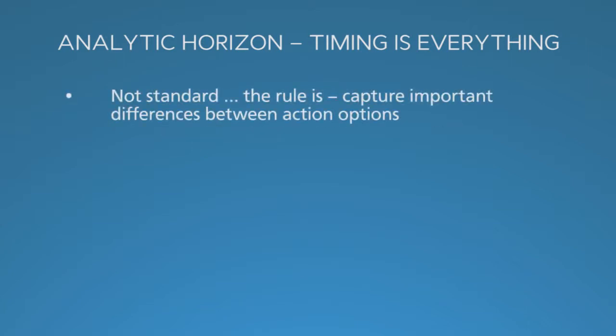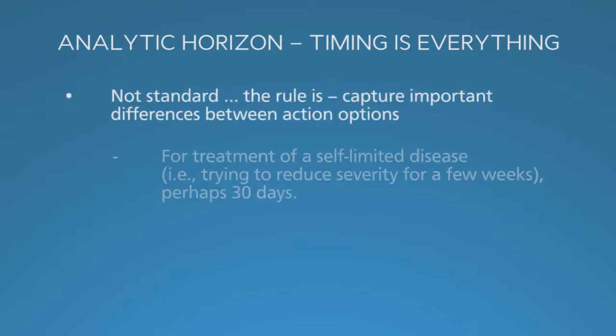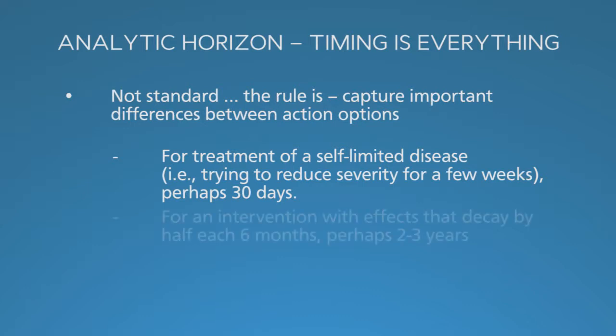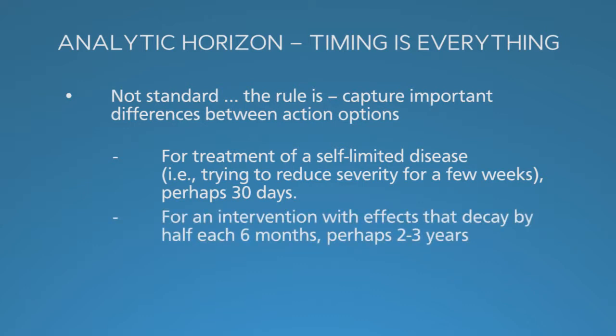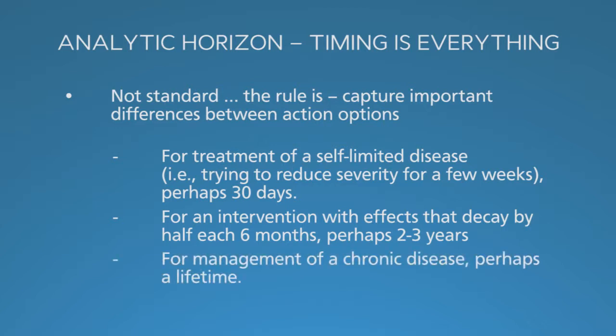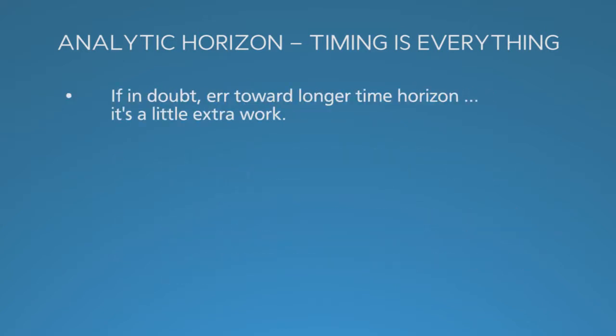For a rapidly resolving illness, 30 days may be sufficient. For an intervention that loses its effects within two years, a three-year horizon may be fine. For a chronic disease, the horizon should extend decades — a natural lifespan. When in doubt, go long. It's not much extra work, and missing delayed effects is a worse problem than introducing a little projection error.